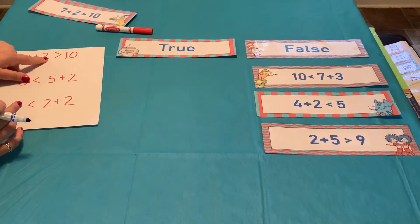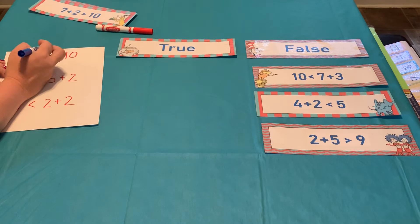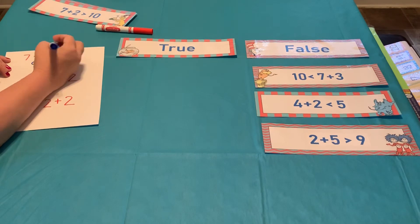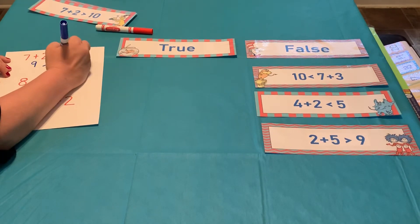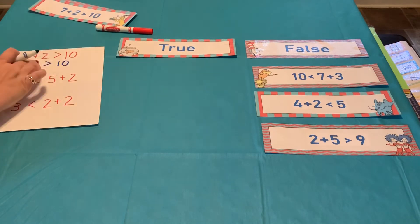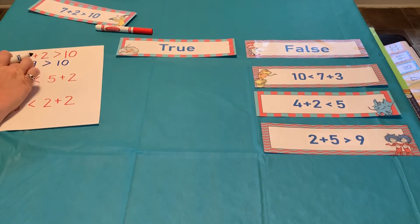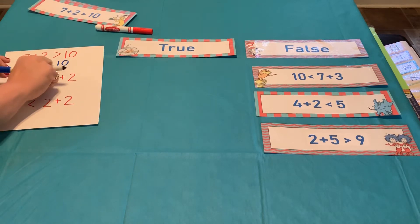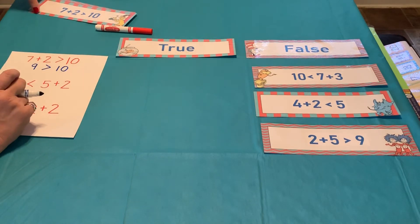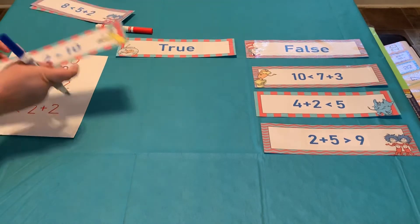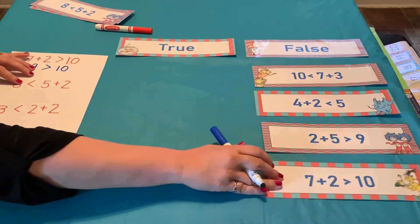7 plus 2. 7 plus 2 is greater than 10. So, 7 plus 2. I count on inside my head. 7, 8, 9. 7 plus 2 is equal to 9. It is greater than 10. Is that true? Is the alligator eating the largest number? No. The alligator is eating the smallest number. So, that statement is also false.